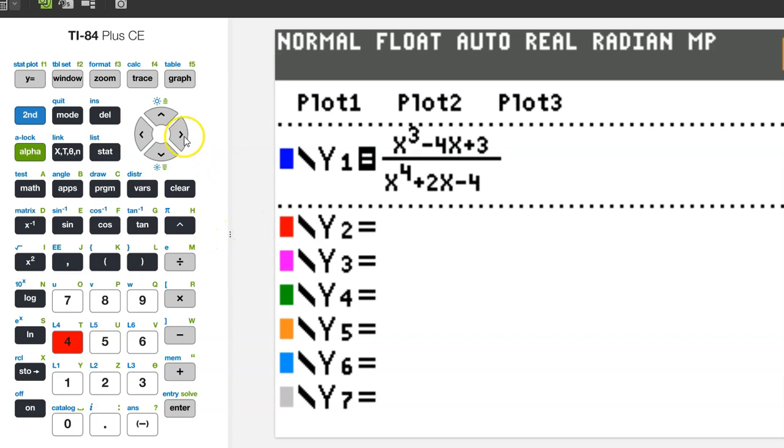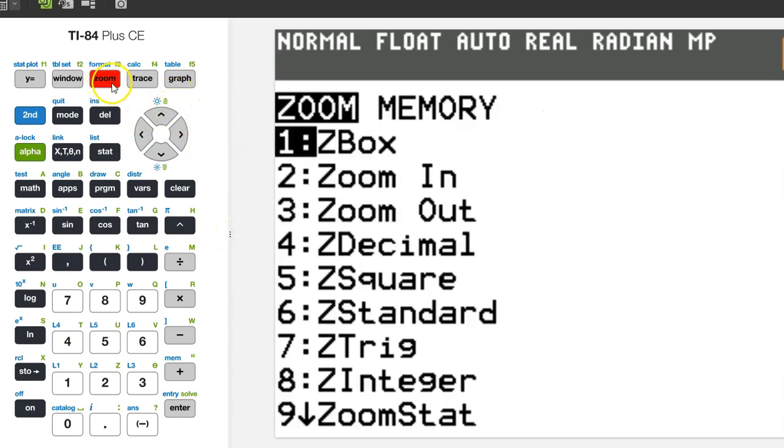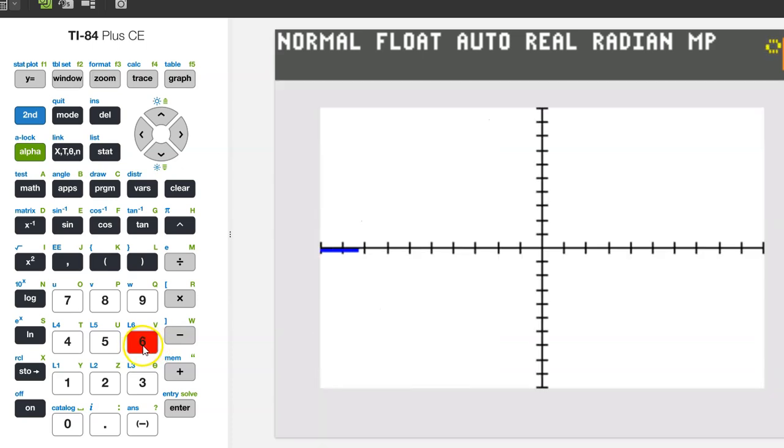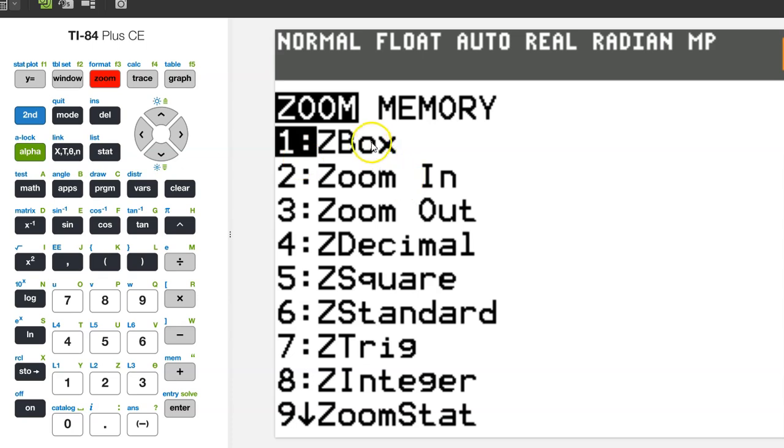So let's graph it. To start off with a standard 10 by 10 window, let's hit zoom 6. From this distance it looks like there will be three x-intercepts. There seems to be one here, one here, and one here. This little jag right here is probably a vertical asymptote. But let's zoom in a little bit more. What would be fun is zoom box. Let's check that out. Zoom box, that's zoom one.